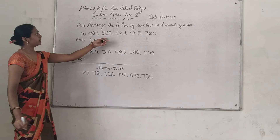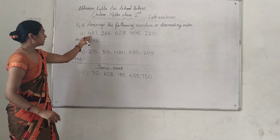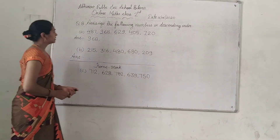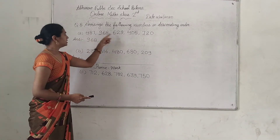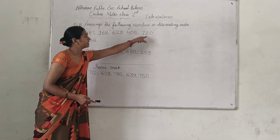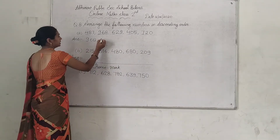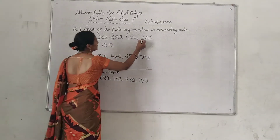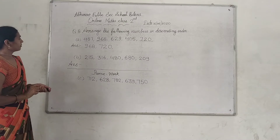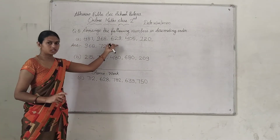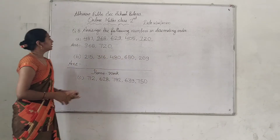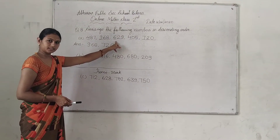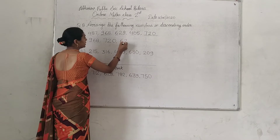Next, from the remaining numbers, we look at 400, 600, 400, and 700. The biggest number here is 720. So we write 720 next. Then we have 400, 600, and 400 remaining.